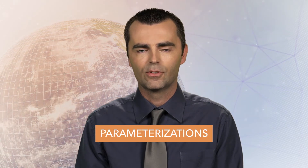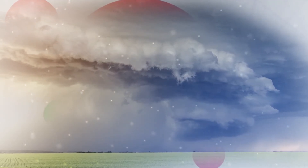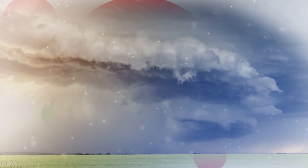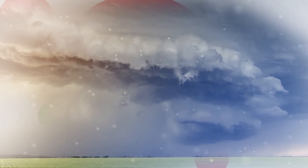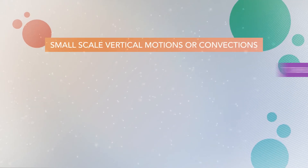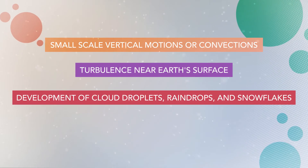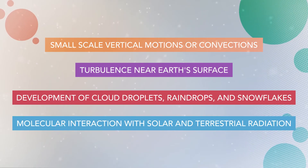Some processes are either too small in size or too short in duration to be modeled well. In these cases, simplified representations of these processes, called parameterizations, are used. Individual thunderstorms are one example of these small-scale phenomena. Modelers represent the physical impacts of these processes, such as the exchange of heat and moisture between the small-scale and the large-scale. Global climate models typically include parameterizations for processes such as small-scale vertical motions or convection, turbulence near the Earth's surface, development of cloud droplets, raindrops, and snowflakes, and molecular interactions with solar and terrestrial radiation.